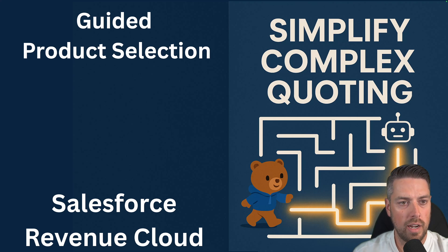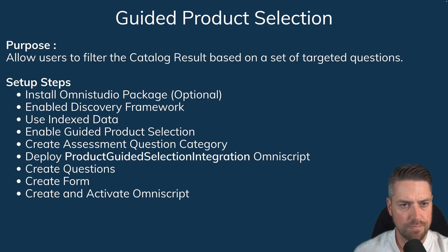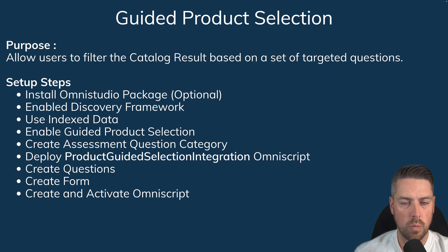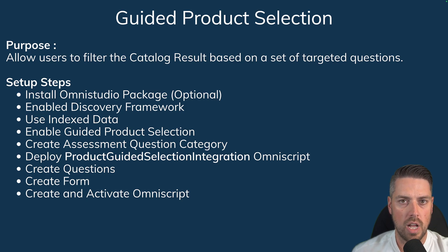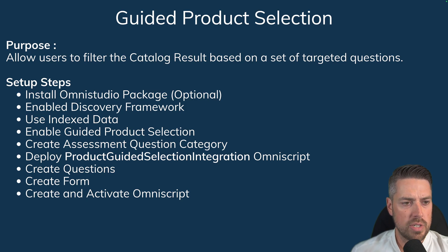Hello everyone, today we're taking a look at a highly requested video: Guided Product Selection in Revenue Cloud. So what is Guided Product Selection? It will allow you to create a set of targeted questions that will filter the catalog results you see in the Browse Catalogs page for products. The user will fill in and answer those questions, and based on the results, filter down the available products to be selected and added to a quote.